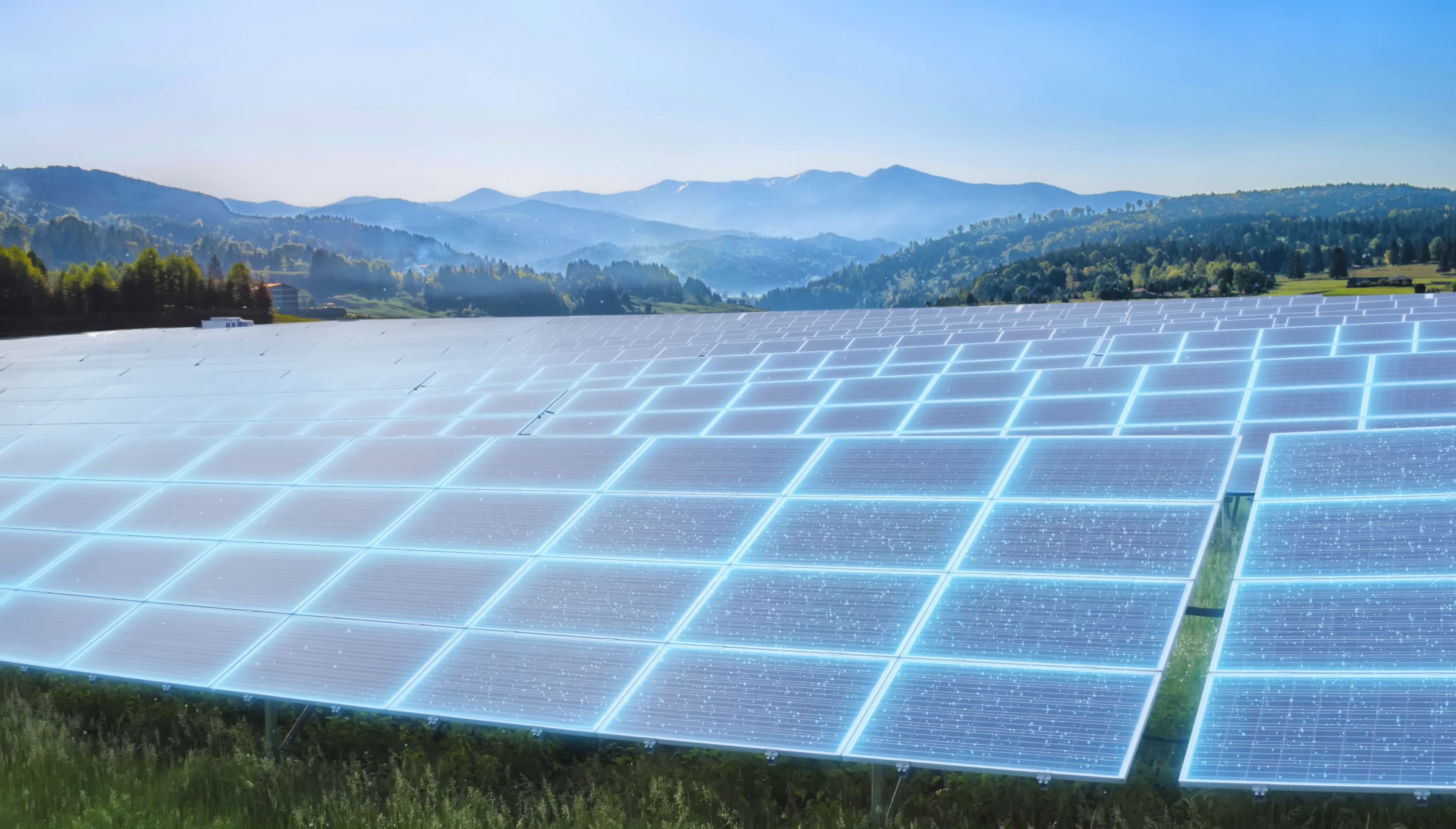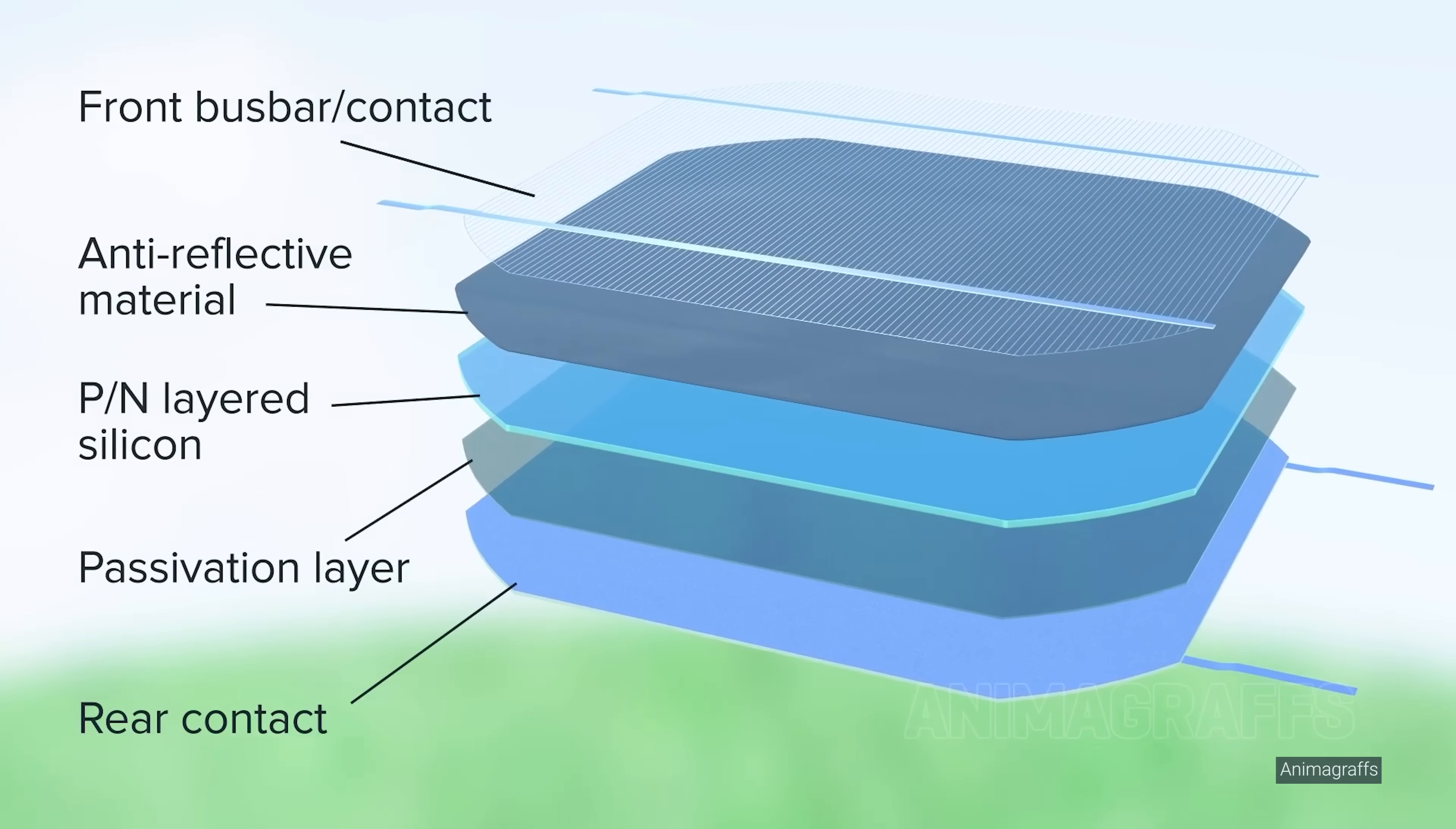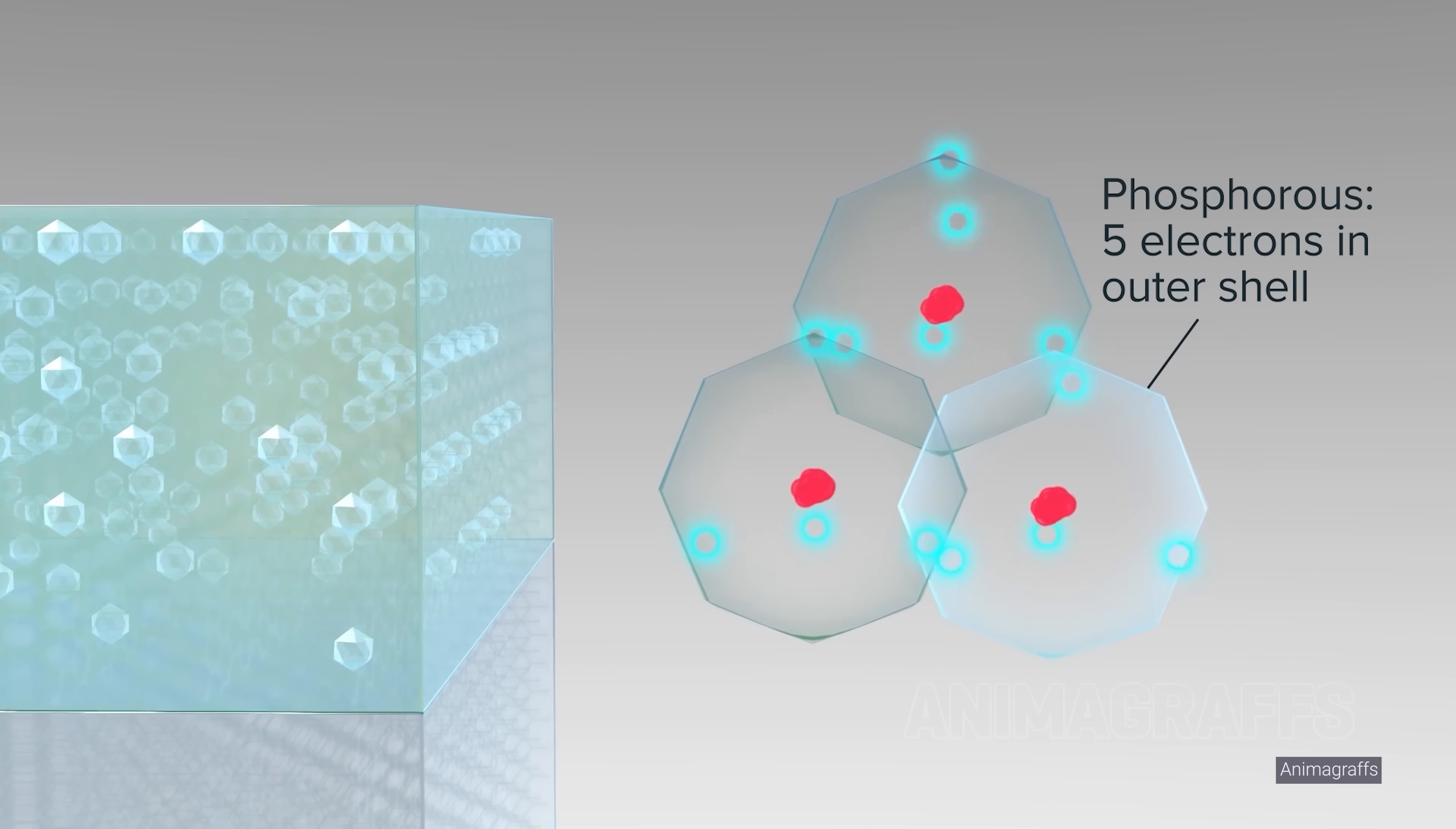To understand why perovskites hold an advantage over traditional silicon solar cells, let's first do a basic refresh of how photovoltaic cells convert sunlight to electricity. The top and bottom parts of a solar cell contain semiconductor materials with different electrical properties. In a traditional silicon cell, for example, silicon is used for both layers.